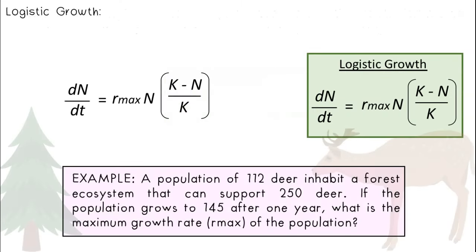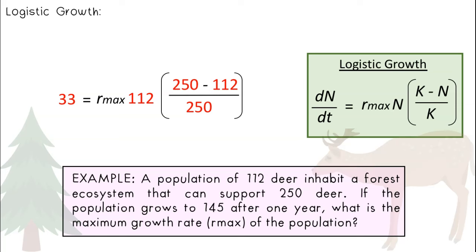A population of 112 deer inhabit a forest ecosystem that can support 250 deer. If the population grows to 145 after one year, what is the maximum growth rate of the population? n is the initial population, that's 112. dN over dt, the amount of change in that given period of time, is 33. We now have a carrying capacity, which is represented by the variable k. This ecosystem can support 250 deer. Solve the right side of the equation, and isolate for rmax. We get a value of 0.53.